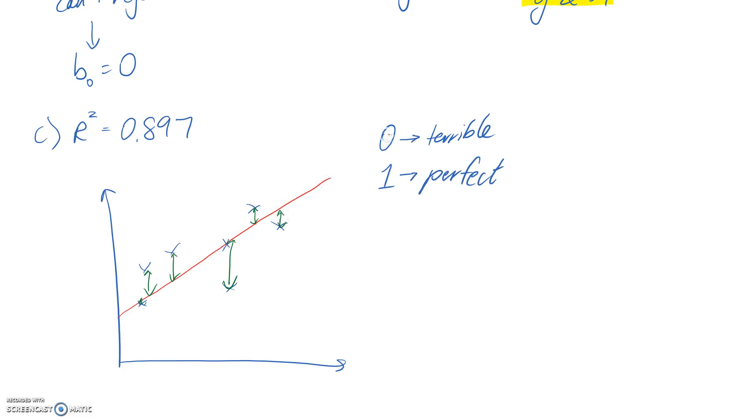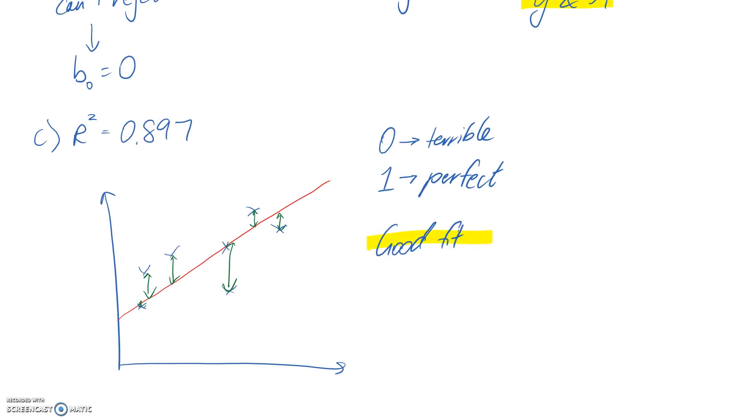So in reality, you're pretty much going to get a number between these two, and the closer you are to 1, the better. So here we've got a value that's pretty close to 1. So I would say that it's a good fit, the model onto the data. So that's pretty much all there is in terms of this video.